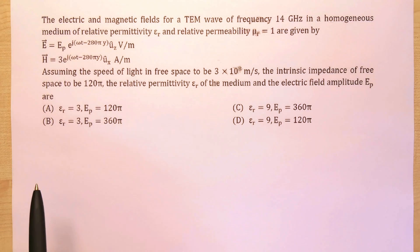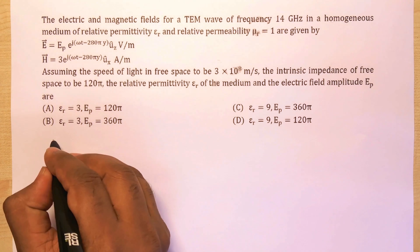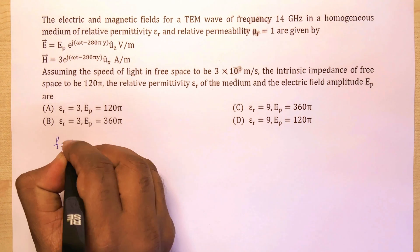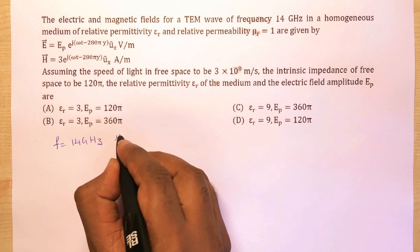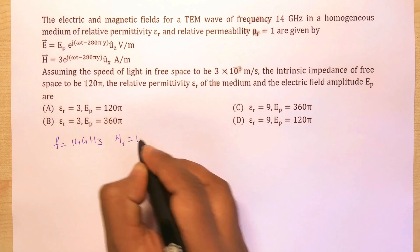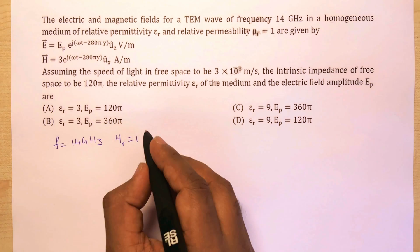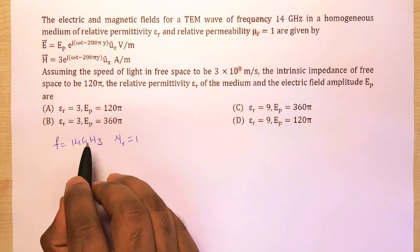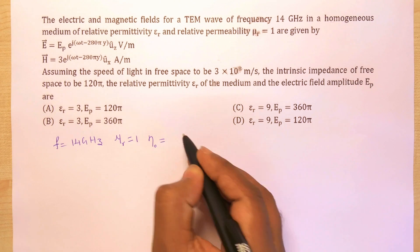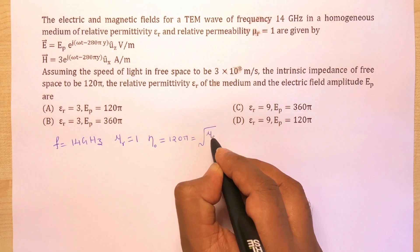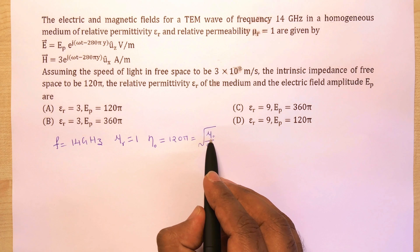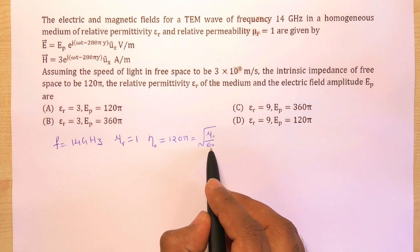Let's write down the given information. The frequency is 14 GHz. The relative permeability μr of this homogeneous medium is 1. The intrinsic impedance of free space η₀ is 120π, which equals √(μ₀/ε₀), where μ₀ is the permeability of free space and ε₀ is the permittivity of free space.